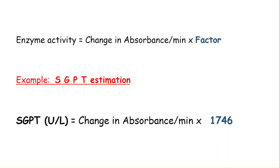As you can see on the screen, enzyme activity is equal to change in absorbance per minute multiplied by the factor. The change in absorbance per minute you can get from the analyzer. Now the question is: where does this factor come from?